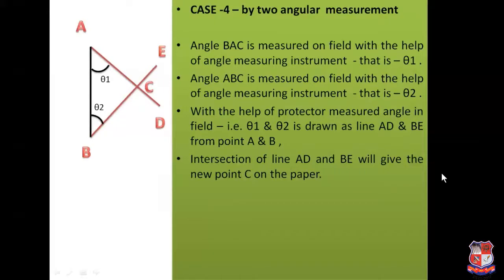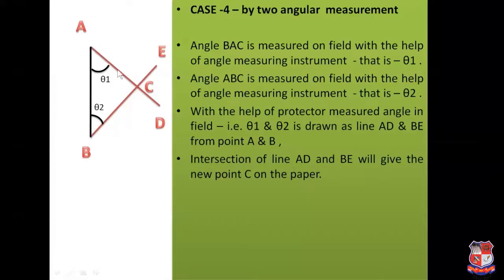Case number 4: by two angular measurements. The first angle BAC is measured on the field with an angle measuring instrument and equals theta 1. The second angle ABC is measured in the field and equals theta 2. With the help of a protractor, the measured angles theta 1 and theta 2 are drawn as lines AD and BE from points A and B respectively. The intersection of line AD and line BE gives the new point C on the paper.